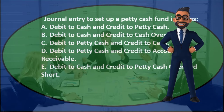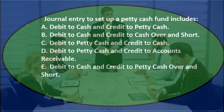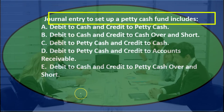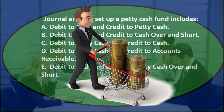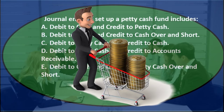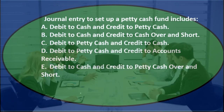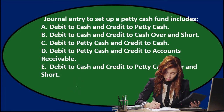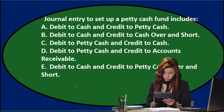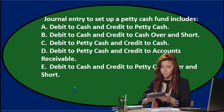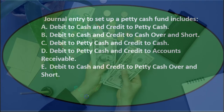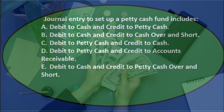This is one where we want to write the journal entry down ourselves first, otherwise we'll get turned around with the debits and credits. To set up petty cash, we take money out of the normal checking account and put it into petty cash — both are asset-type accounts with debit balances. So the journal entry would be: debit petty cash, credit cash. The money comes out of cash and goes into petty cash.